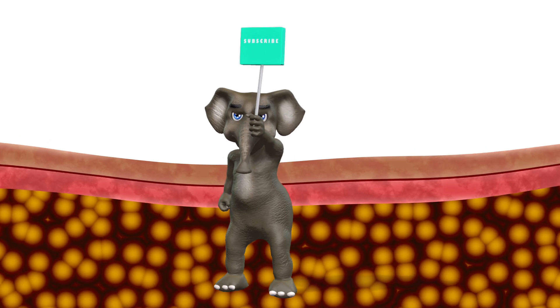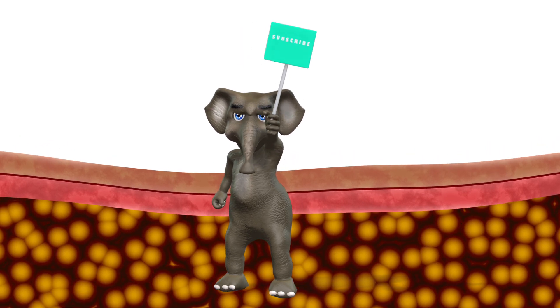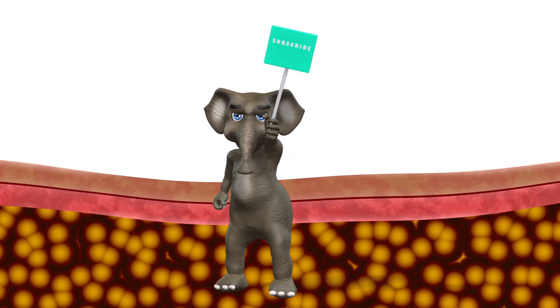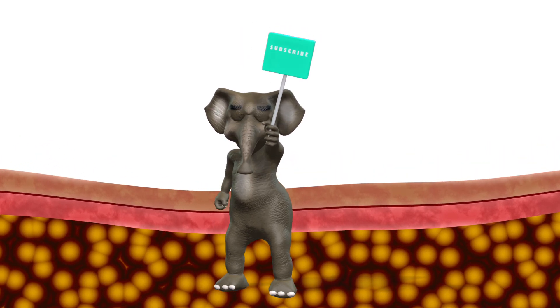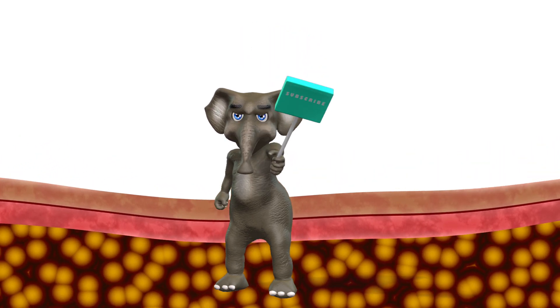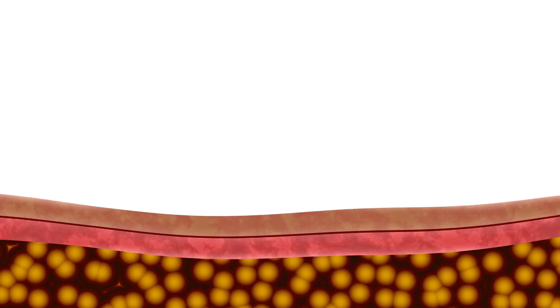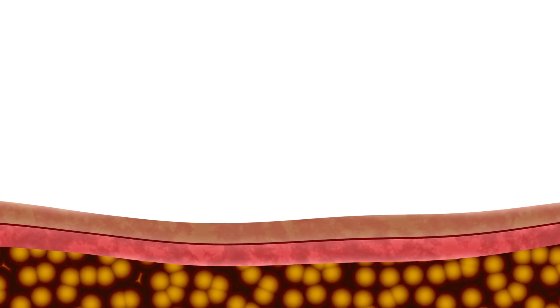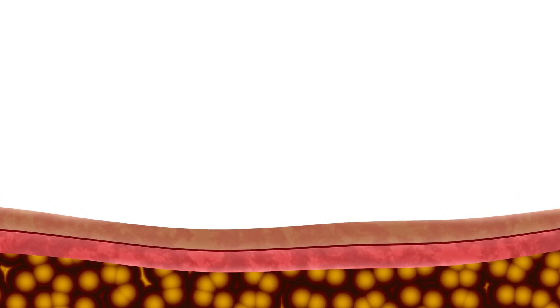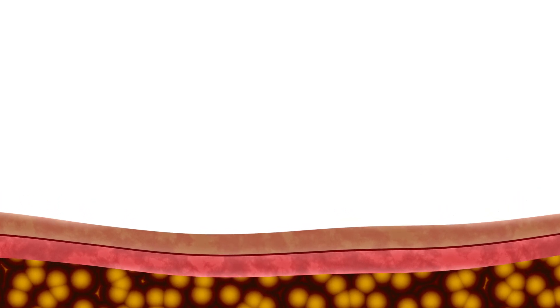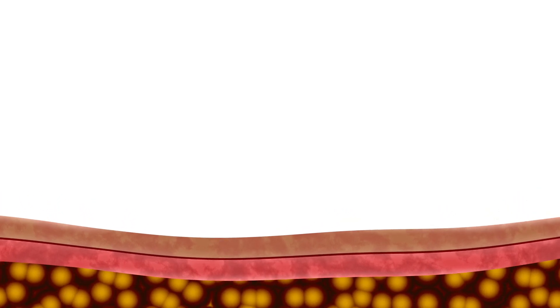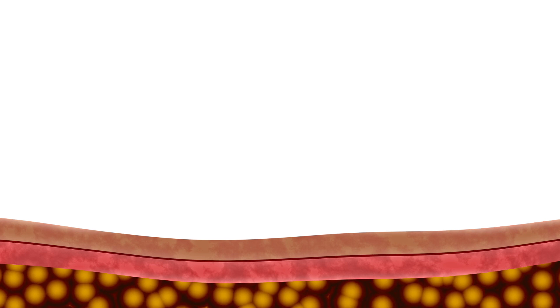There's also intramuscular fat, which appears as tiny streaks or marbling within your muscle tissue. While some intramuscular fat is normal, excess amounts can make muscles weaker and less efficient.